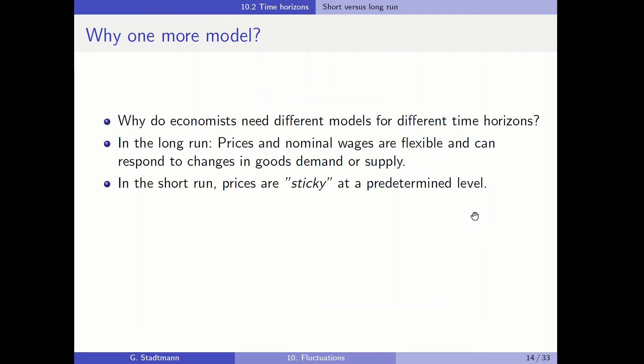In chapter 10, a new model is introduced — the aggregate demand and aggregate supply model. Why do economists need different models for different time horizons? In the long run, prices and nominal wages are flexible and can respond to changes in goods demand or supply. But in the short run, prices are sticky at a predetermined level and therefore cannot adjust.